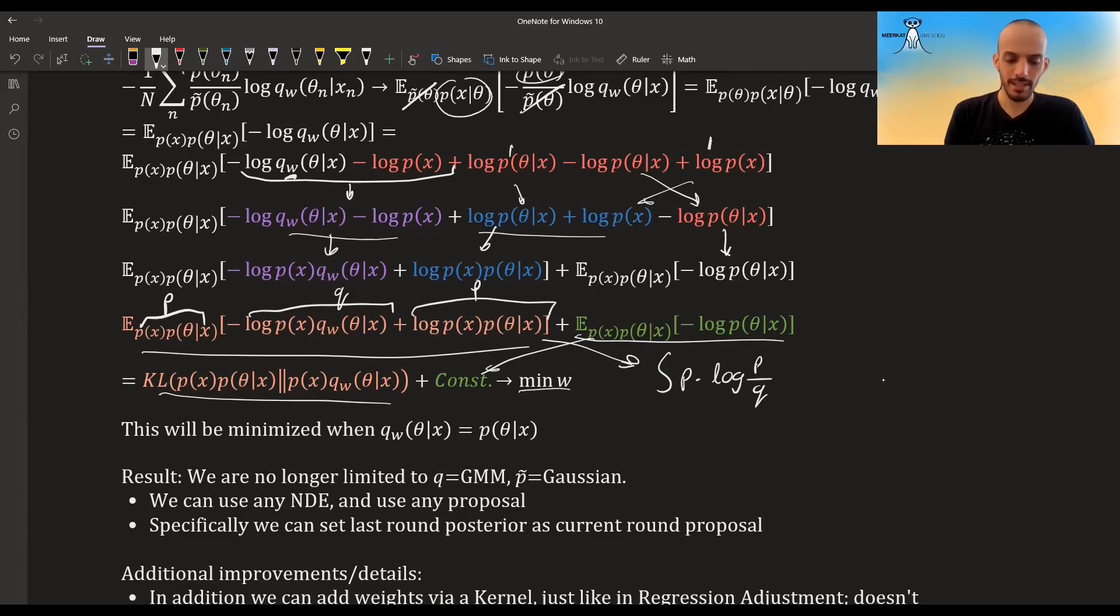So we have—this whole thing is just the integral of p times log of p divided by q, which is exactly the Kullback-Leibler divergence. And this thing over here is just a constant term—it doesn't depend on the w, on the weights. So if we want to minimize it with regards to the weights, we only can change this thing—this is the knob we can turn in order to change this quantity.